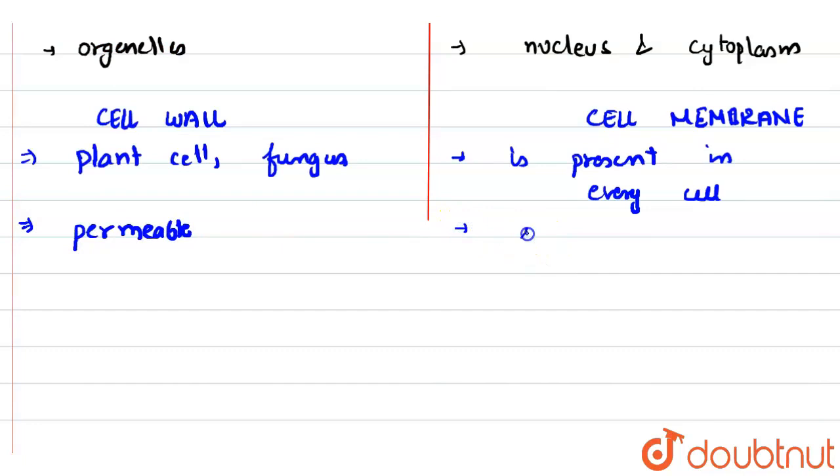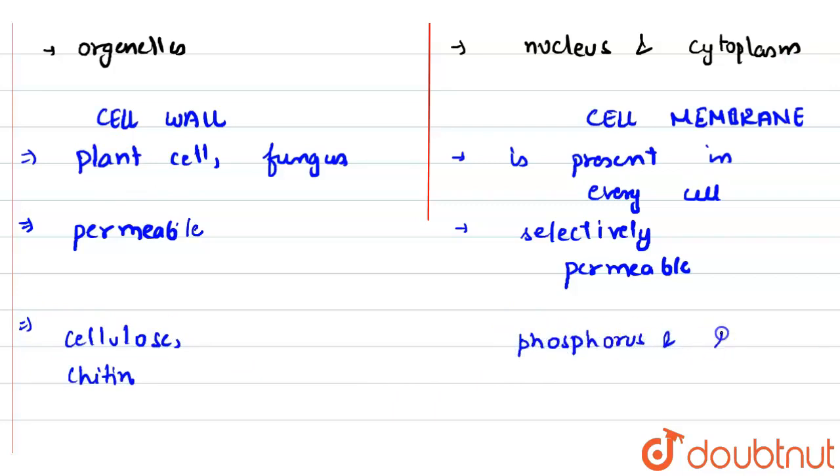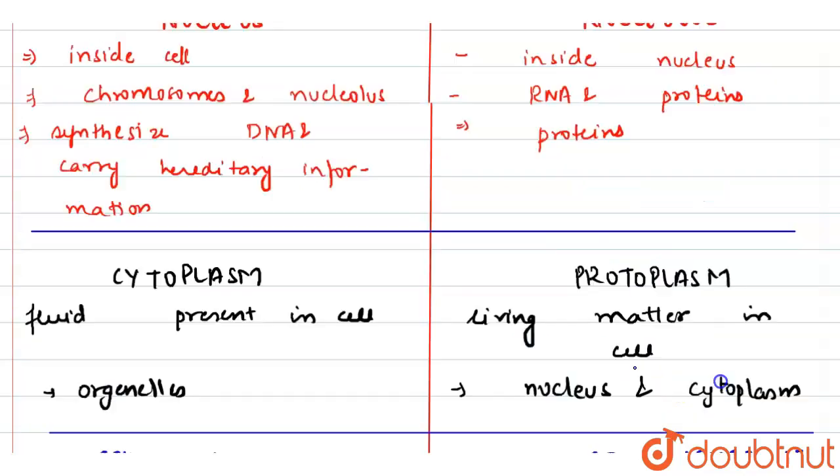Whereas cell membrane is selectively permeable, as it allows the flow of only some selected materials. Cell wall is made up of cellulose in case of plants, chitin in case of fungus, whereas cell membrane is made up of phospholipids. Along with it, it also consists of some protein molecules and carbohydrates. These are the differences. Thank you.